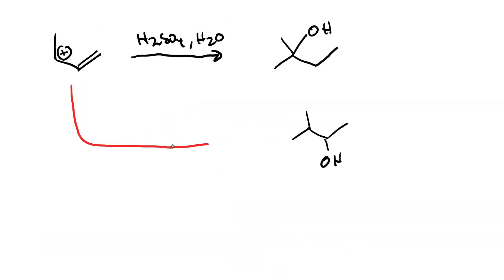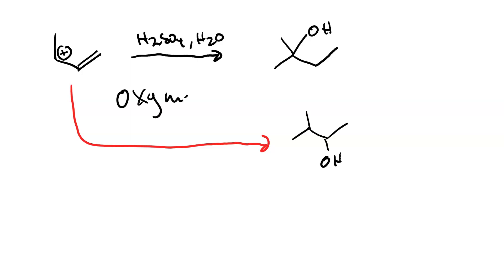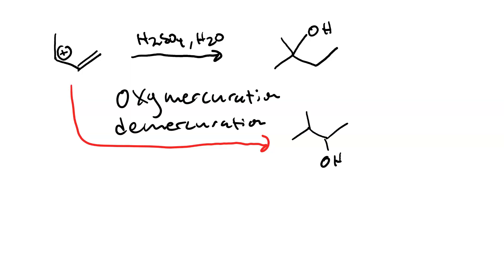Does that mean it's impossible to get the product we initially desired? No, it's not. We just need to employ oxymercuration-demercuration. This gives you Markovnikov hydration without rearrangement.